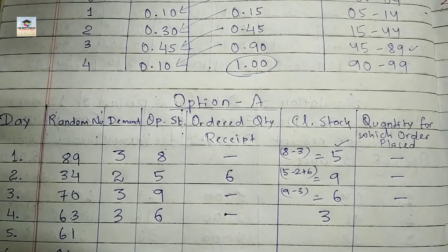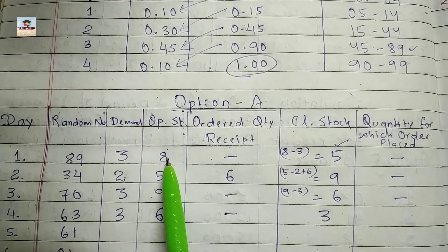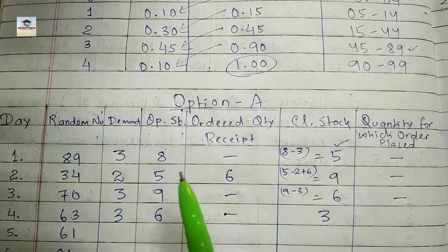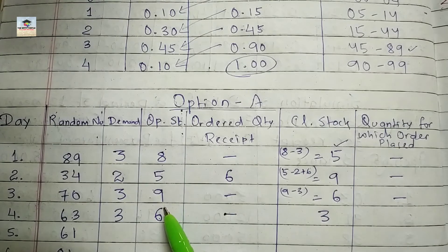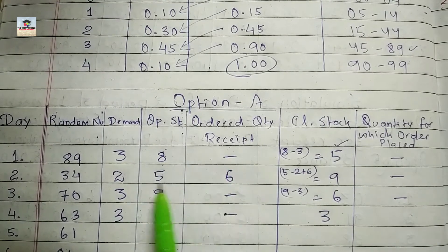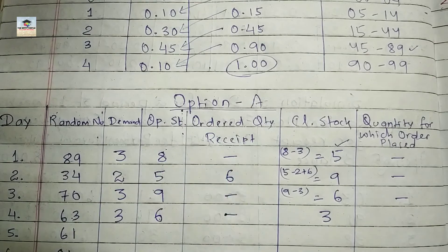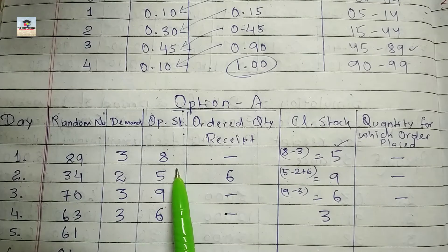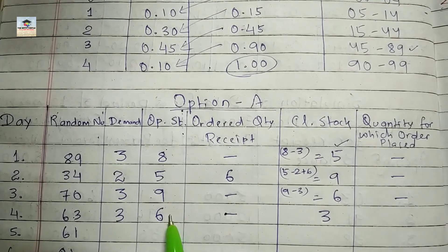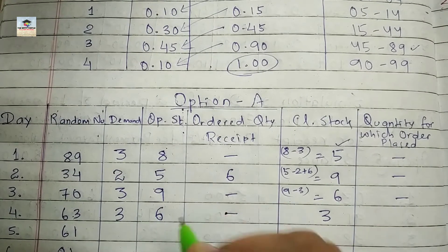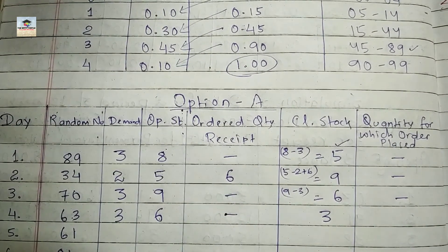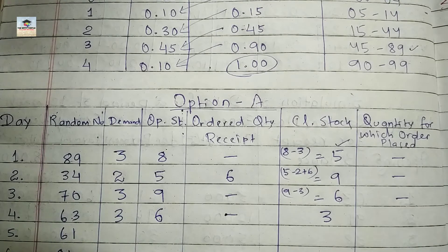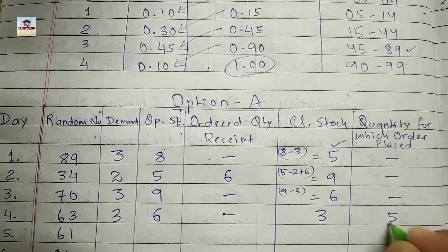Now check the condition: opening stock plus order outstanding should be less than eight. Looking at these two columns — in day four, the sum is less than eight. So according to option one, you have to place an order of five books.